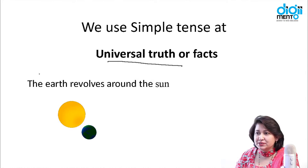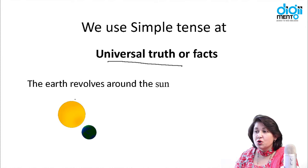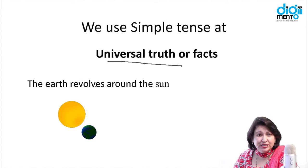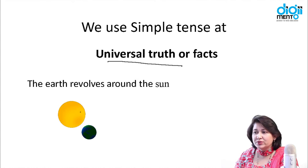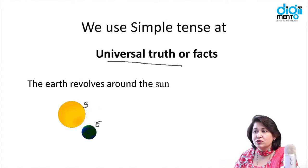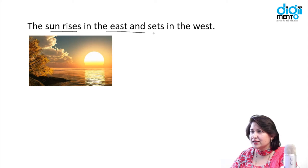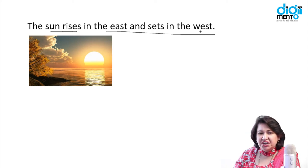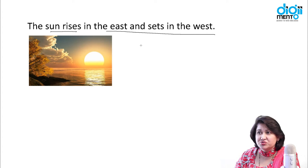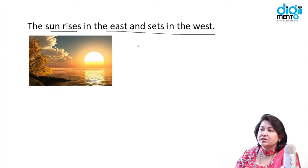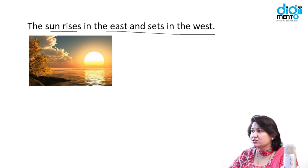Let's look into some examples of universal truths. The earth revolves around the sun — whether you are in India or the States, we all know the earth revolves around the sun. The sun rises in the east and sets in the west — whether you are in Japan, India, or the UK, the sun always rises in the east and sets in the west. This is a universal truth which remains the same wherever you go.